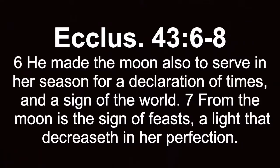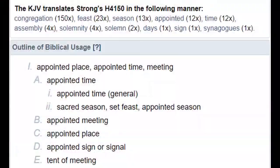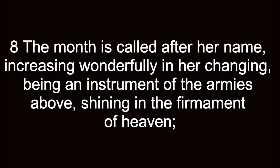Ecclesiasticus chapter 43 verses 6 through 8: 'He made the moon also to serve in her season, for a declaration of times and a sign of the world.' Verse 7 is key: 'From the moon is the sign of feast, a light that increases in her perfection.' When we look at the moon, it is for a sign of feast, assembly, appointed place, a meeting. Verse 8: 'The month is called after her name, increasing wonderfully in her changing, being an instrument of the armies above, shining in the firmament of heaven.'